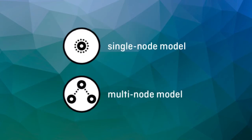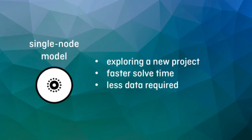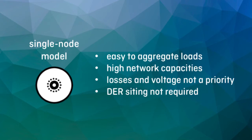The first step is to select either a single node or multi-node model. You will be prompted to make this selection whenever you create a new project. A single node model is usually the best option for starting a new design, even if you think you will eventually like to build a more complex multi-node representation. Single node models can be solved much faster and require less data to get started, allowing you to quickly assess design options. For multi-building sites, single node models generally work well when loads can be easily aggregated, the network capacity between buildings is high, losses or voltage concerns inside the microgrid network are not a top modeling priority, or the siting of DERs within the microgrid is not required as part of the design solution.